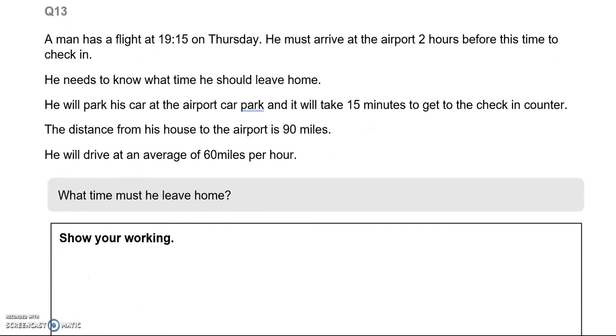Question 13. A man has flight at 19:15 on Thursday. He must arrive at the airport 2 hours before his time to check in. He needs to know what time he should leave home. He will park his car at the airport car park and it will take 15 minutes to get to the check-in counter. The distance from his house to the airport is 90 miles. He will drive at an average of 60 miles per hour. What time must he leave home? So we'll take this step by step. He needs to be there at 19:15. Well, that's when the flight will start.